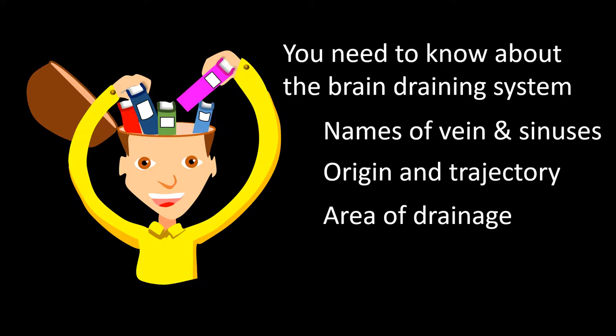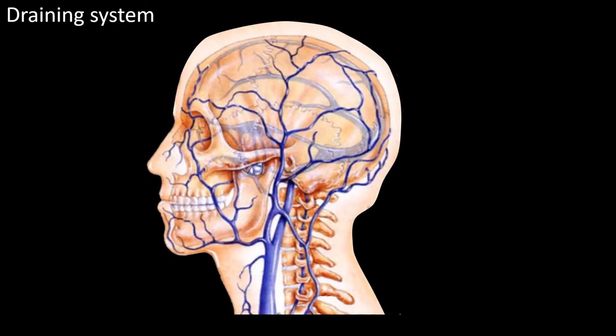Most of the time I will let the drawing do the talking in regard to area of drainage, and will emphasize name, origin, and trajectory. In the next frame I will show you a 3D drawing of the brain in the skull. In this drawing you can get a perspective of the relative position of the vessels in relation to the bony structure surrounding them.